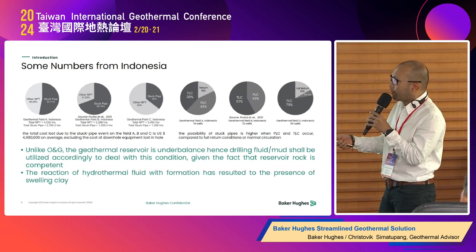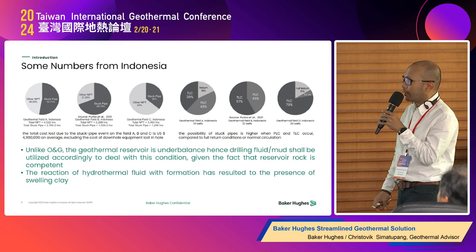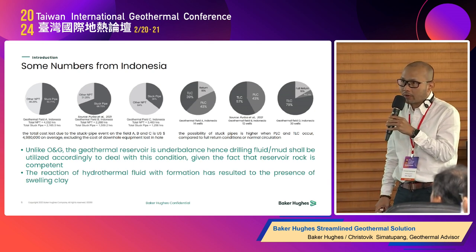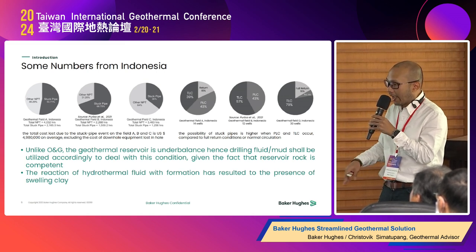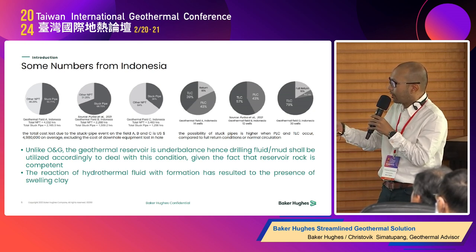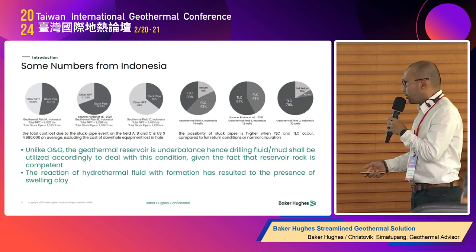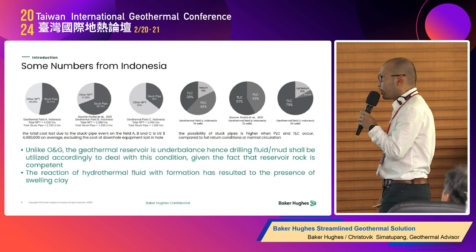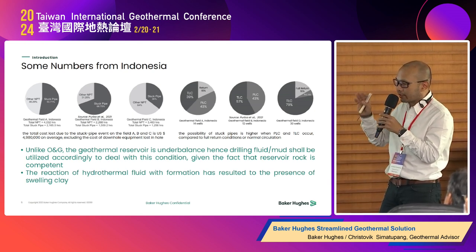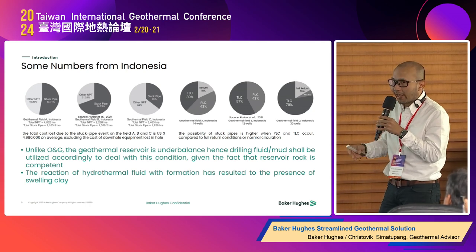Some numbers from Indonesia, from a paper published by Provo et al. in 2021: most stuck pipe incidents in Indonesia are associated with loss zones where we are drilling blind, meaning no cuttings are returning to the surface. When we penetrate that interval we don't know what we are dealing with. This stuck pipe also contributes to non-productive time. Unlike oil and gas, the geothermal reservoir is underbalanced, so drilling fluid and mud must be utilized accordingly, and their reaction with the formation must be anticipated since most geothermal formations can react with any fluid used during drilling.